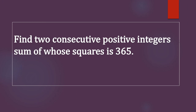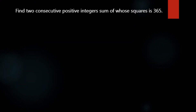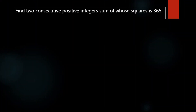Find two consecutive positive integers, sum of whose squares is 365. Here we have to find two consecutive positive integers, sum of whose squares is 365.